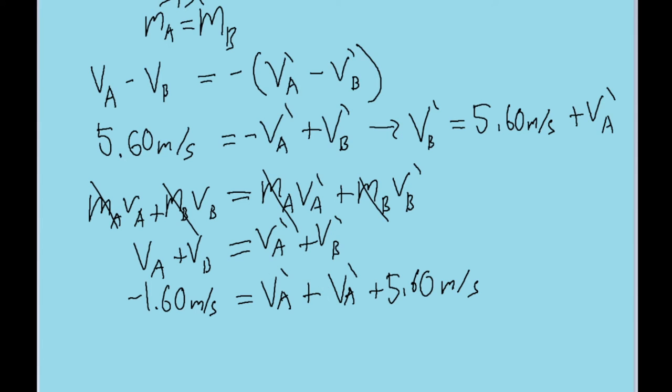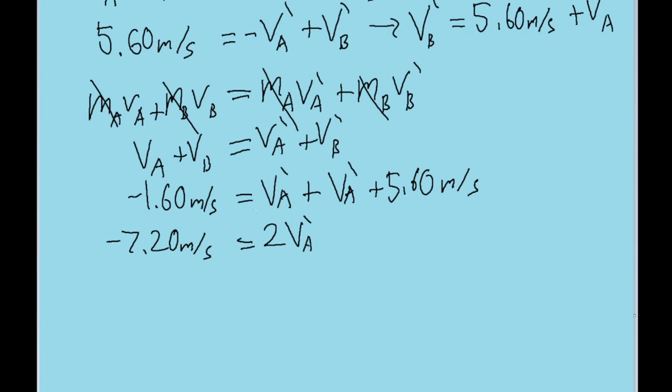Now that we have this, the only unknown in the equation is V_A prime. So we can just solve this equation now for that. First I'm going to subtract both sides by 5.60 meters per second. And that's negative 7.2 meters per second. On the right, we have V_A prime plus V_A prime, so that's 2 V_A prime. And to solve for V_A prime, we just divide both sides by 2.